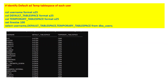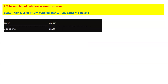There is often a requirement to identify the default and temporary tablespace of each user. When you create a user, a default tablespace and a temporary tablespace are assigned — these can be custom or default. To identify which default tablespace and temporary tablespace are related to a particular user, run the particular query shown on the screen.